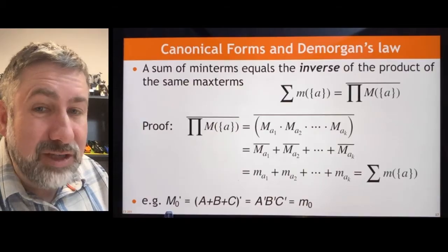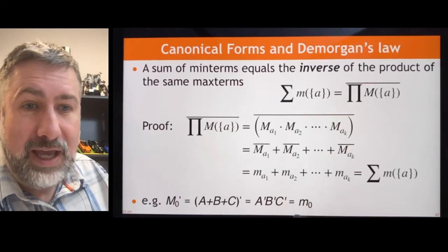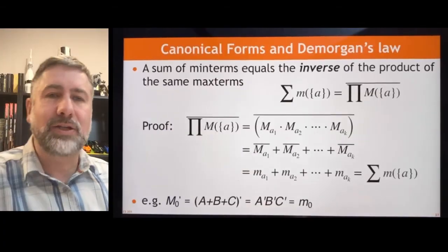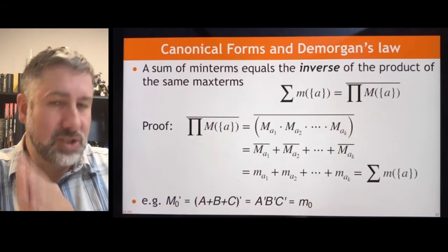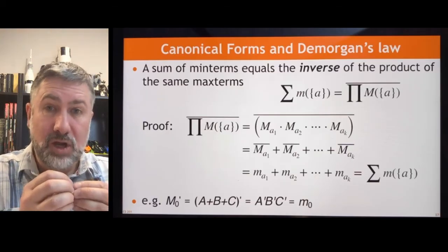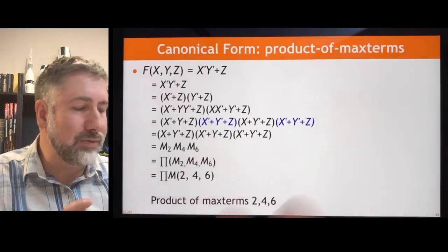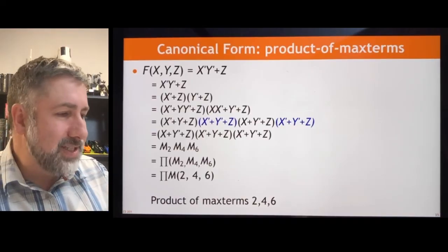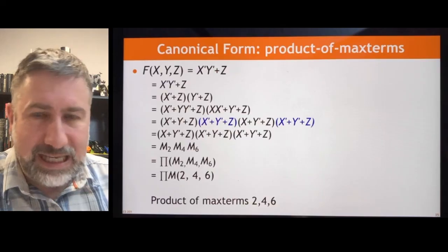In general, the opposite of any individual max term is the equivalent min term: max term 0 is false when A, B, and C are all false, and min term 0 is true when A, B, and C are all false. In the next set of notes, we'll look at how to go from a canonical form — sum of min terms or product of max terms — into something simpler. We know we can take any function and go to a unique canonical form, which means we can go to a set of min terms that tells us exactly whether that function is equivalent to some other function with the same set of min terms. We'll be able to follow a specific set of rules that will guarantee the simplest function for any given logical expression.